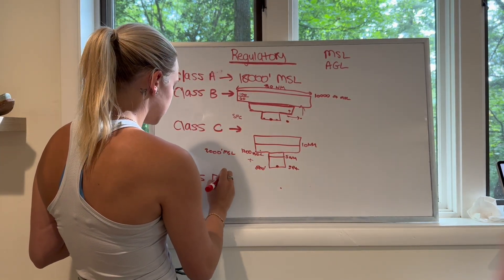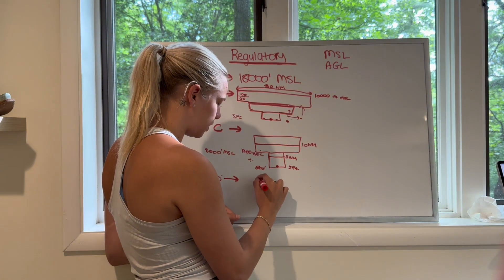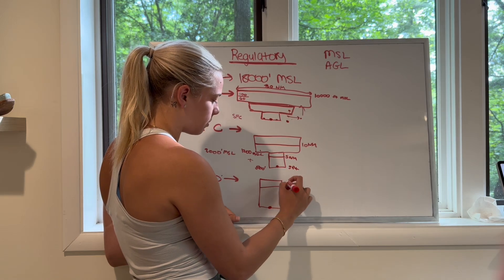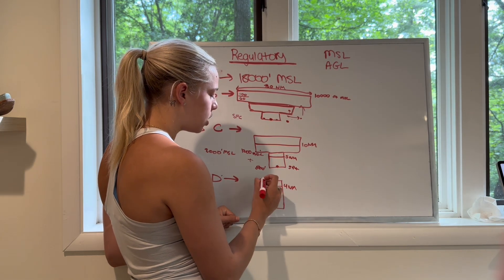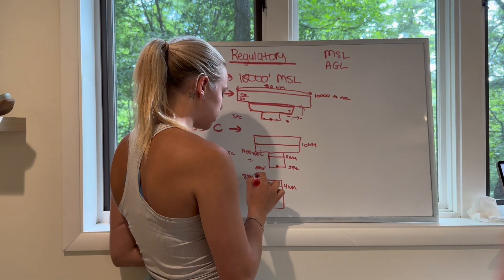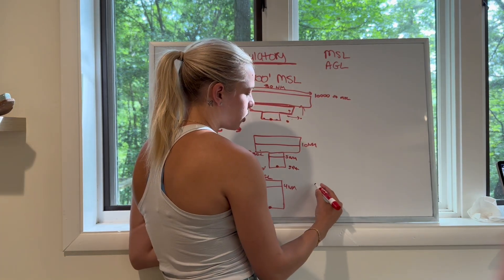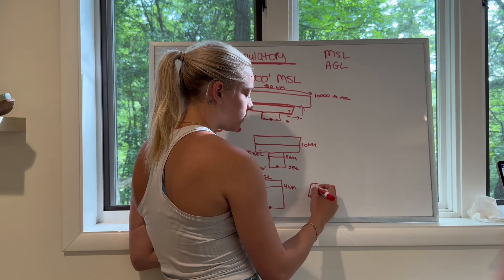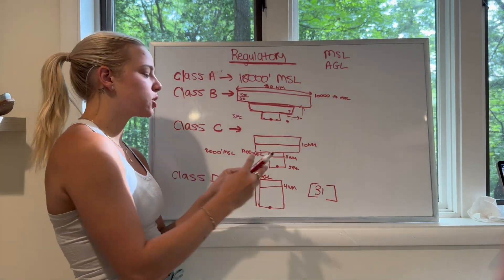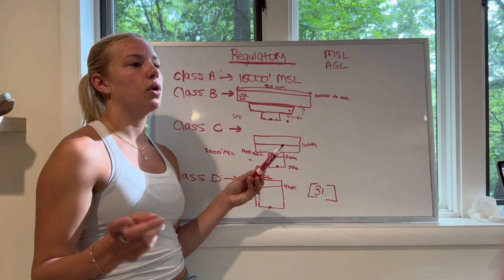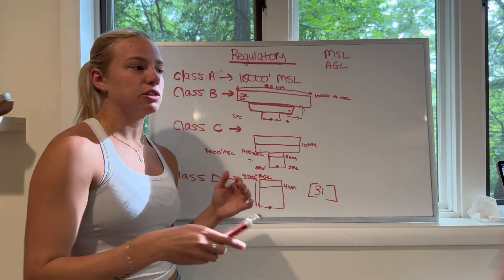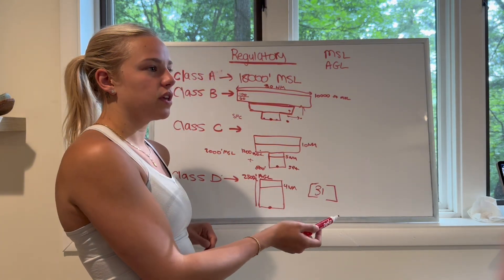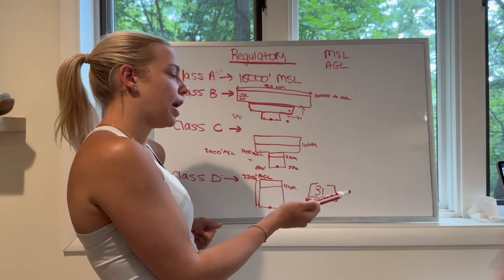Class Delta is really simple — it's generally four nautical miles across and goes up to 2,500 feet AGL. When looking at it on ForeFlight, it will display a number like 31, meaning it goes up to 3,100 feet MSL. If you're flying at 3,500 feet, you're flying over top of the airspace and don't have to worry about it. But if you're flying at 3,000 feet MSL, you're flying through the airspace and you do need to worry about it.